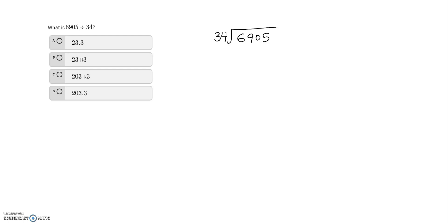We need to write the times table of 34. I'll show you on the side. So 34 times 2: 2 times 4 is 8, 2 times 3 is 6 — that gives us 68.